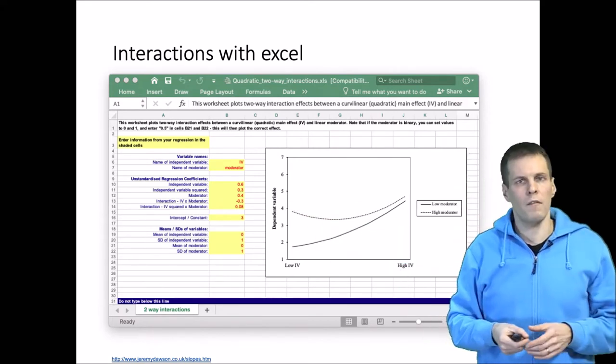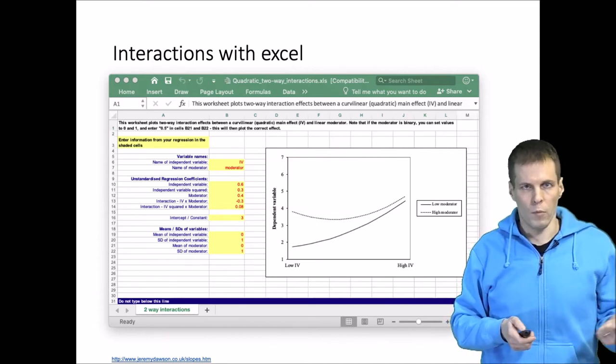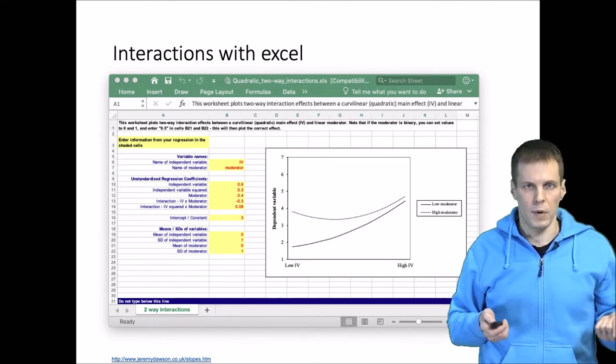You can have a nonlinear effect, a U-shape or parabola of one variable, and then one moderator, but basically two variables that explain the dependent variable.